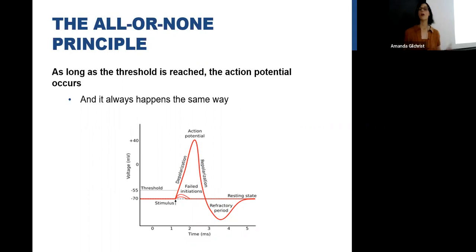As long as you hit threshold, the action potential will always occur. It doesn't matter how intense the stimulation is. If it's enough to trigger an action potential, the action potential will always happen the same way. We're going to use an example of flushing a toilet. How many of you have flushed a toilet and you didn't flush the plunger hard enough? And what happens? It kind of starts a little bit but then it stops. This is what happens when the neuron is stimulated a little bit but not enough to reach threshold.